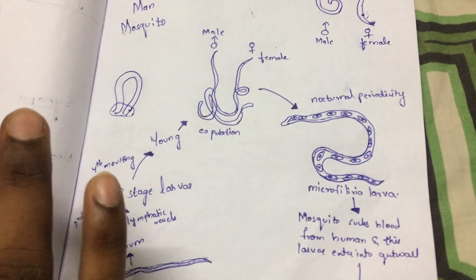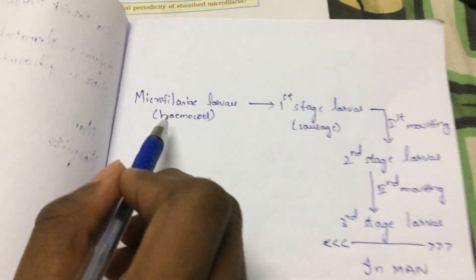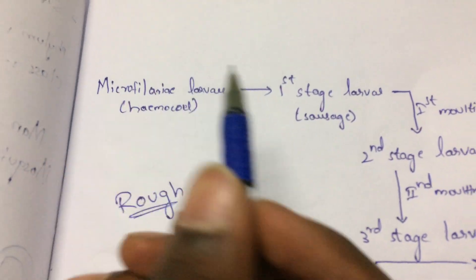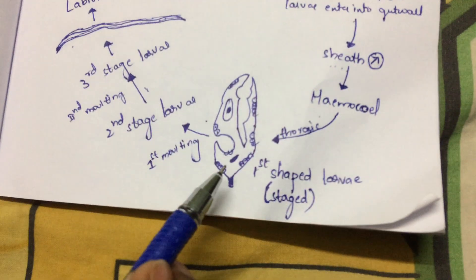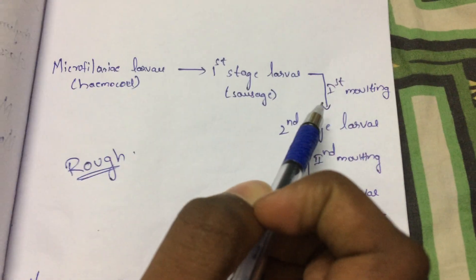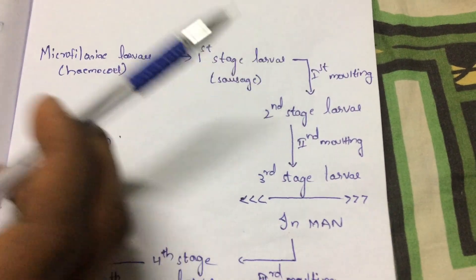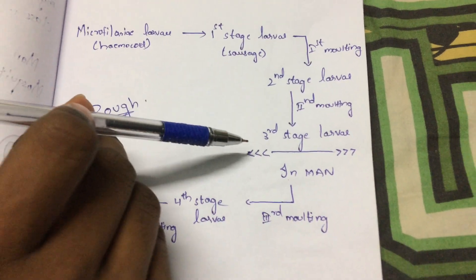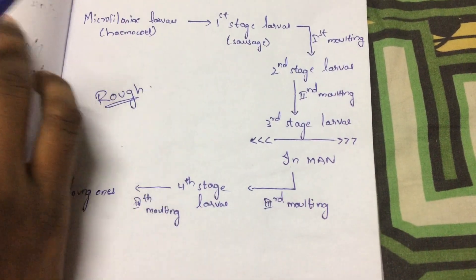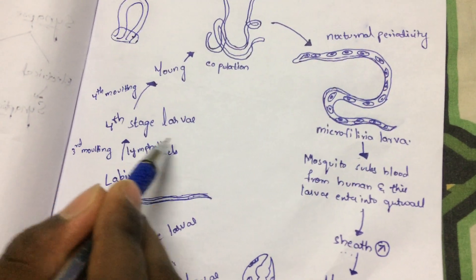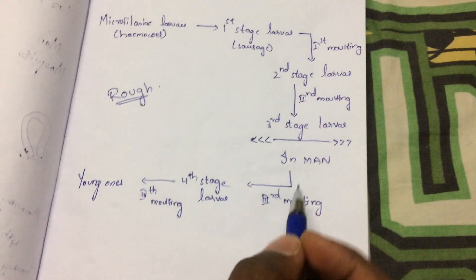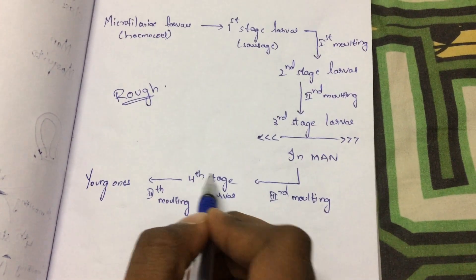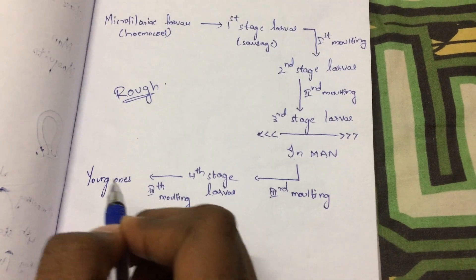This is known as Wuchereria bancrofti cycle. To summarize: the Microfilaria larva present in the hemocoel undergoes first stage larva — the sausage-shaped structure — which undergoes first molding to form second stage larva. The second stage larva undergoes second molding to form third stage larva. The third stage larva infects a fresh candidate of man, where it undergoes third molding to form the fourth stage larva. The fourth stage larva undergoes fourth molding to form the young adult worms.